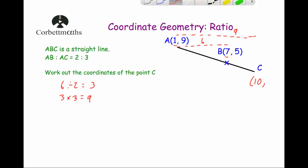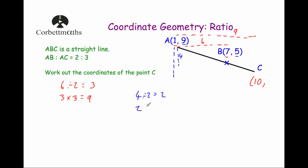Now considering vertically, going from A down to B we go from 9 down to 5, so that's going down 4. We need the distance from A all the way down to C. This line is two parts, so the whole line is three parts. 4 divided by 2 is 2, and 2 times 3 is 6. So going down 6 from A gives us C. A has a height of 9, and 9 minus 6 is 3. So the coordinates of point C are (10, 3).